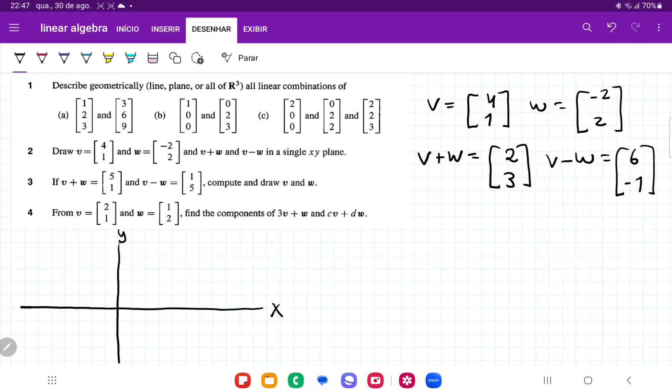So once we have this, let's draw these out. So v is going to be 4 in the x, so 1, 2, 3, 4, and 1 in the y. So that's going to be here, let me connect these, so that's going to be here my vector v.